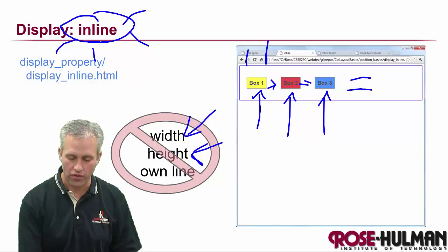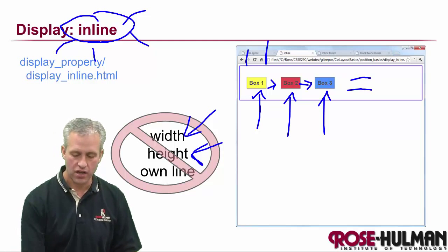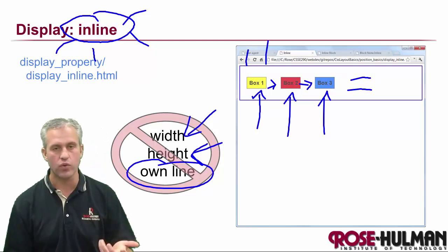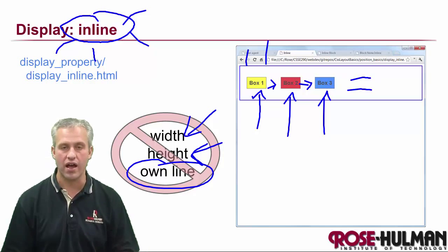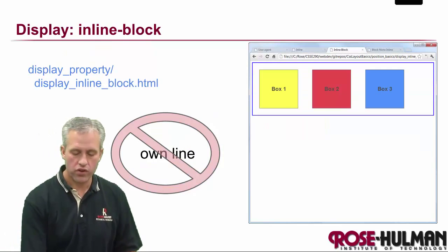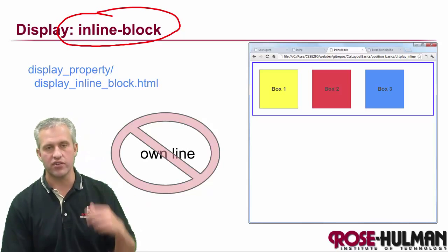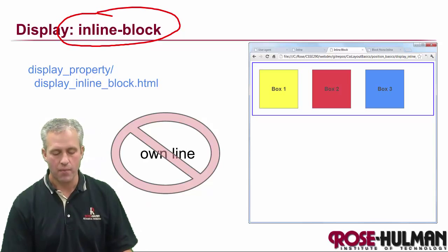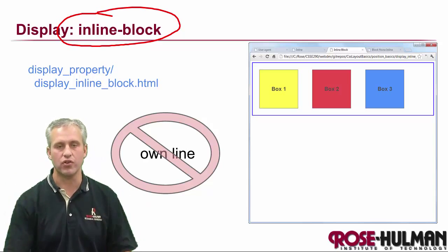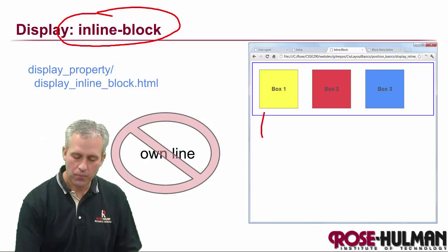That's a big part of understanding these CSS rules — how they interact. The other thing you'll notice with inline is that elements share the line. So we've lost both the width/height control and the own-line feature.